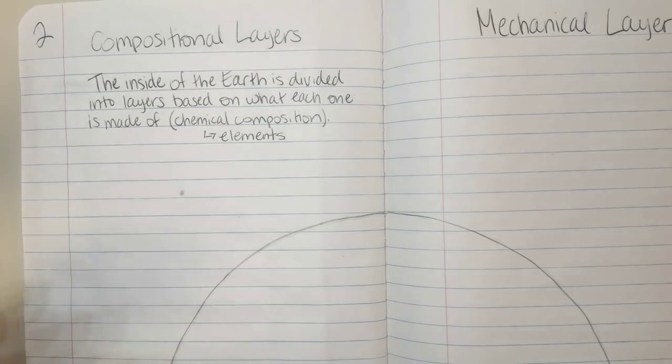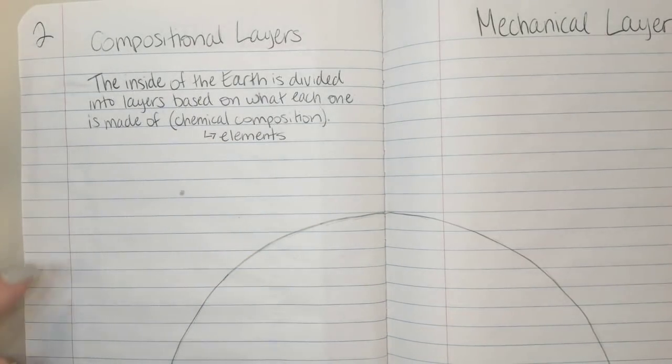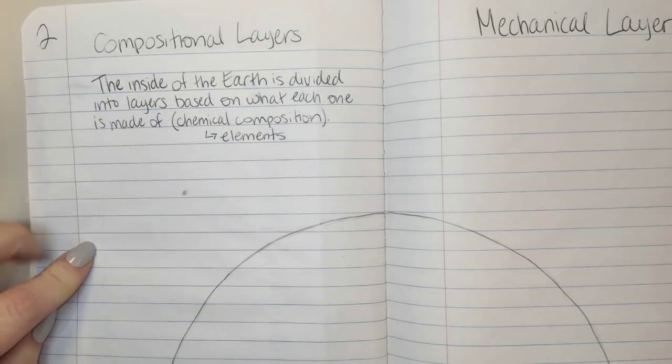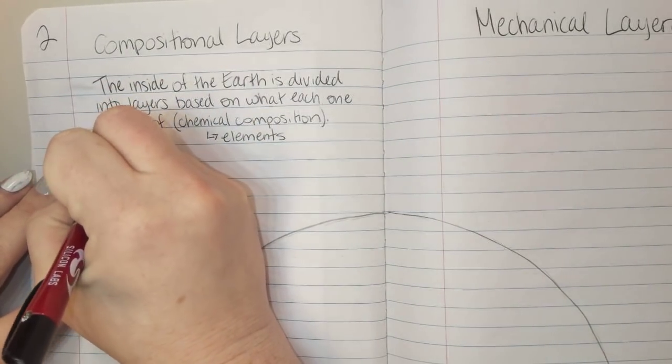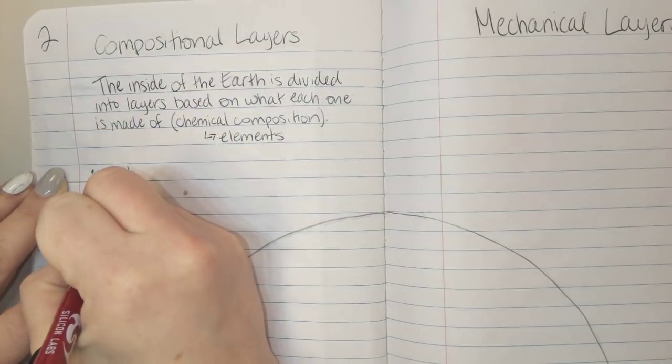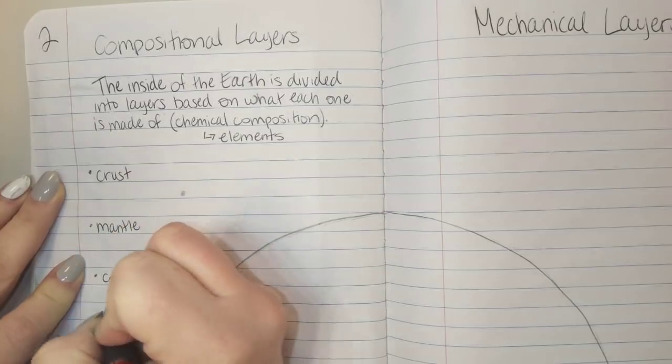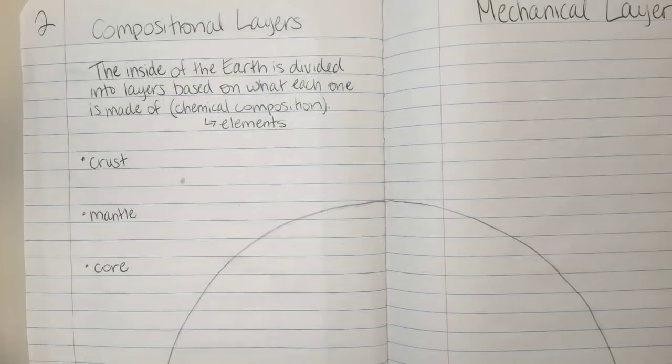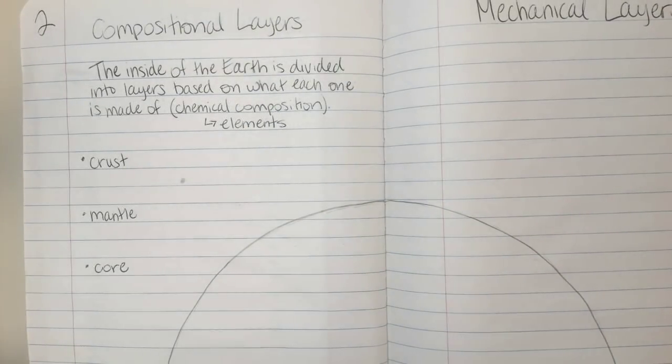We're going to talk about three different layers when it comes to compositional layers. I'm going to list them over here off to the side. We're going to talk about the crust, the mantle, and the core. These words probably sound familiar from fifth grade. These are the basic layers where we've divided it based on what it's made of.